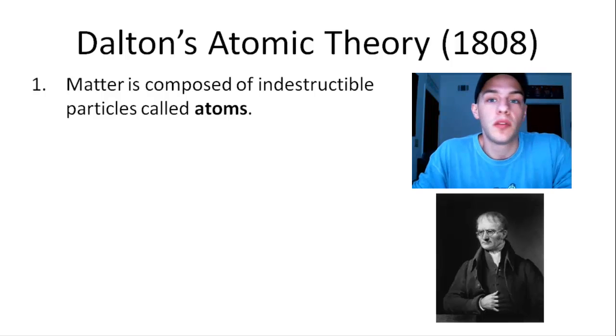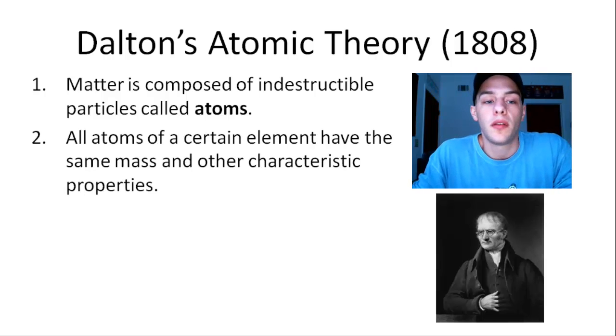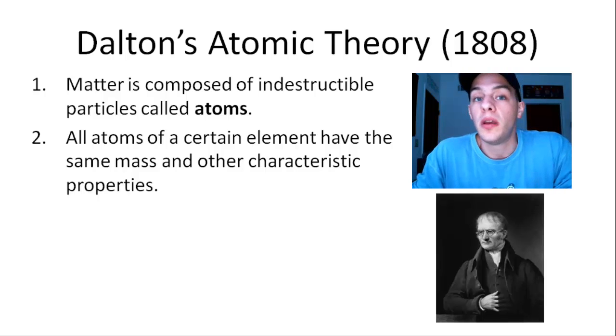But again, back in those days this was pretty revolutionary. The second part of this atomic theory says that all atoms of a certain element have the same mass and other characteristic properties. And we now know this to be untrue as well. Nowadays we know that atoms of the same element can actually have different masses and we call those isotopes.